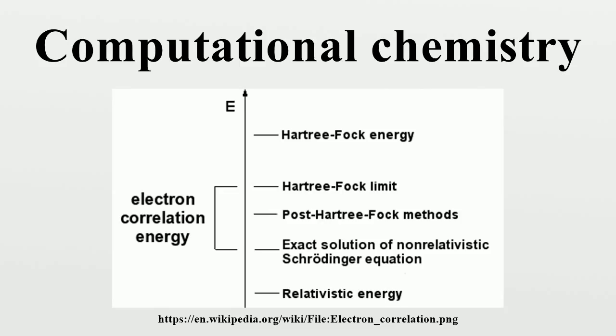A systematic study using a minimum basis set and the first calculation with a larger basis set were published by Ransil and Nesbet respectively in 1960. The first polyatomic calculations using Gaussian orbitals were carried out in the late 1950s. The first configuration interaction calculations were carried out in Cambridge on the EDSAC computer in the 1950s using Gaussian orbitals by Boys and co-workers. By 1971, when a bibliography of ab initio calculations was published, the largest molecules included were naphthalene and azulene. Abstracts of many earlier developments in ab initio theory have been published by Schaefer.